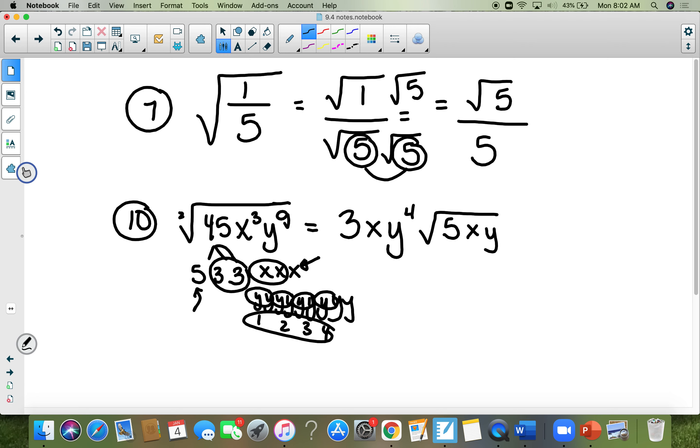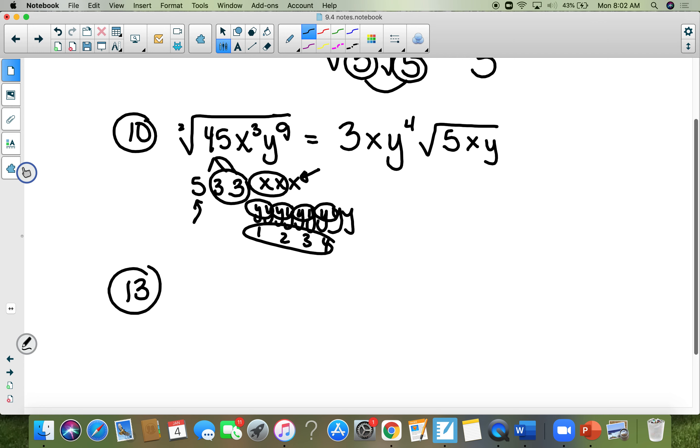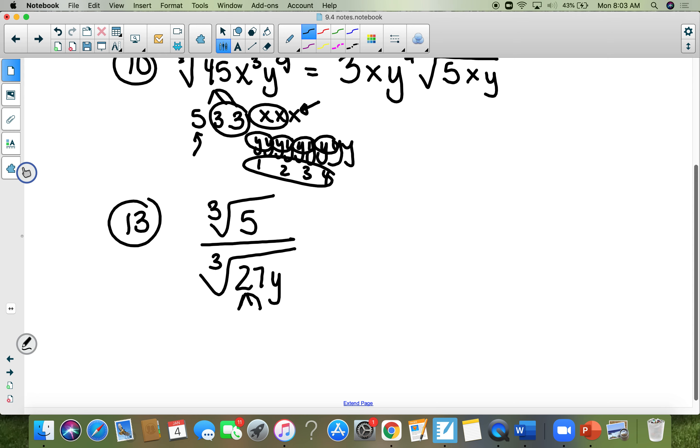And the last problem for today is 13. I'm going to break it up already. It's the cube root of 5 over the cube root of 27y. So all I did was break it up into two separate cube roots. I'm looking for 3's of things. And I know that 27 is 3 times 3 times 3. So I know I need to multiply the top and the bottom by the cube root of something. I just have to figure out what to multiply by. I'm looking for 3's of something. Well, notice that I have enough 3's, I have 3 of them. Notice I only have one y. I need 2 more of them so that there would be 3 of them. So all I have to do is multiply the top and the bottom by the cube root of y².